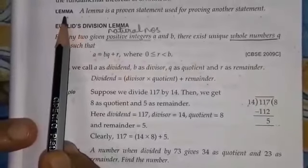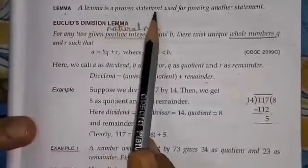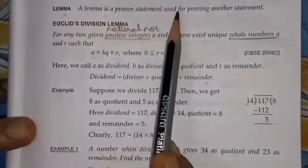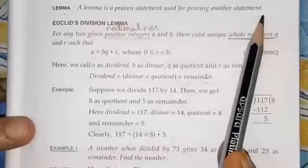What is a lemma? A lemma is a proven statement used for proving another statement.